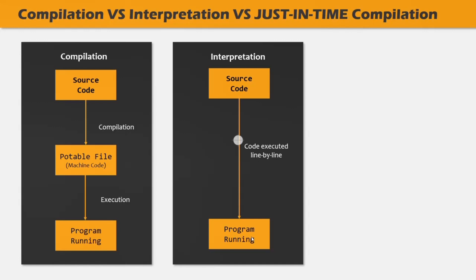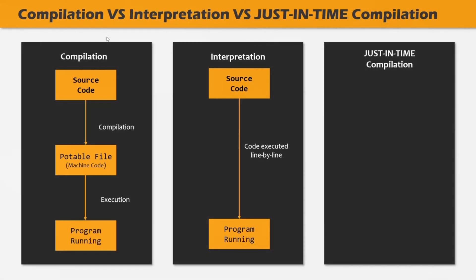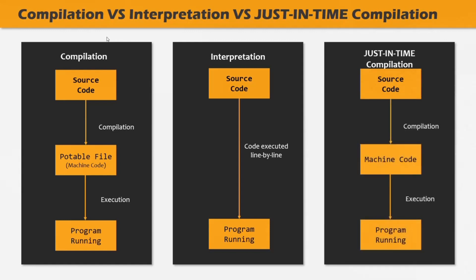Let's talk about just-in-time compilation and how it compiles source code into machine code and executes it. In just-in-time compilation, the entire code is converted into machine code at once and then executed immediately. The source code is compiled to machine code using a just-in-time compiler, and it is executed immediately. We are not saving machine code anywhere in a portable file — as soon as the source code is converted into machine code, it is executed immediately. There is no portable file generated in just-in-time compilation. This is perfect for JavaScript because it is a lot faster than executing code line by line as in interpretation.